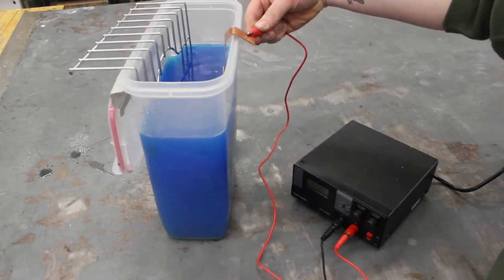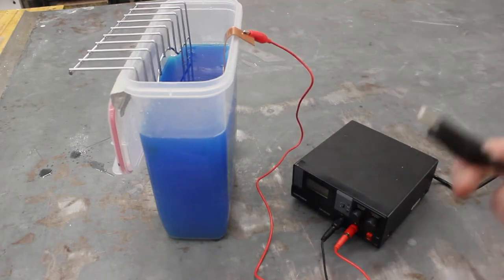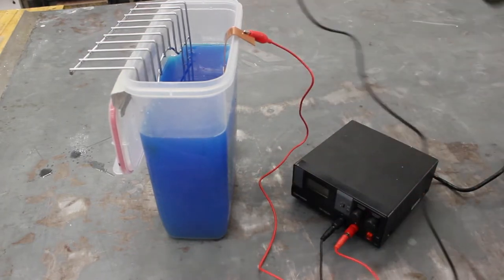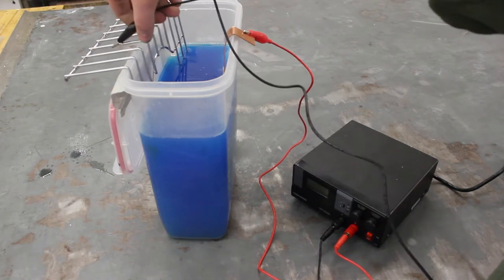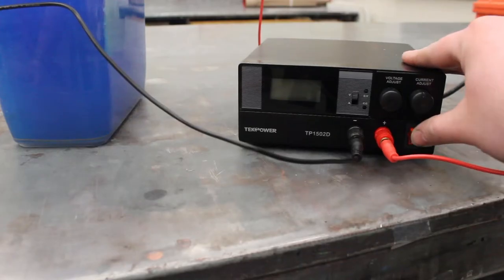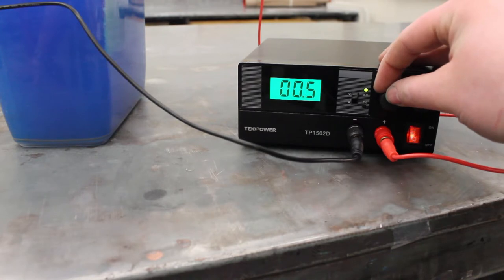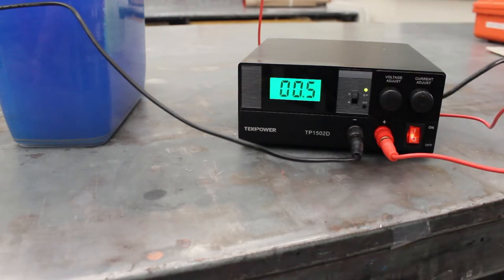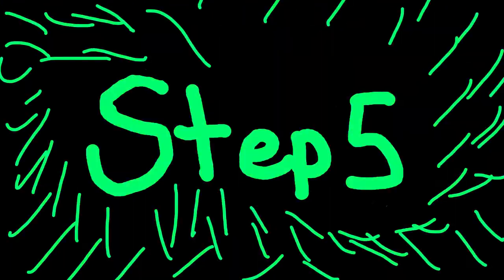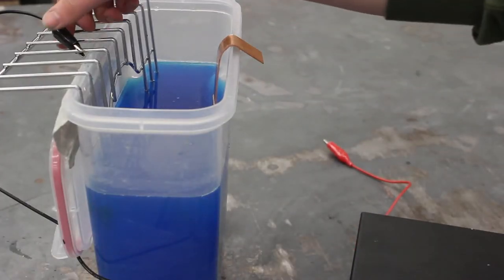You're going to connect the positive, so the red lead, to the copper, and the black lead, the negative, to the cathode grill. Ideally this would be copper, but stainless steel works just fine. At this point, just turn it on. You need it to be set at 0.5 volts. It just takes a little bit of time and patience to get it set at that. Every 15 minutes you need to take the plate out of the water.